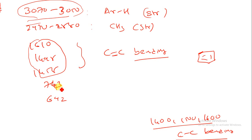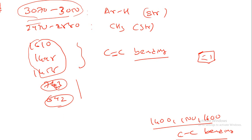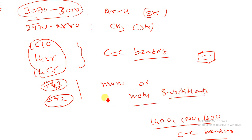For peaks 743 and 692 cm⁻¹: as I explained in my previous lecture, two peaks in the region 690–850 cm⁻¹ give two probabilities — first, monosubstitution, and second, meta substitution.